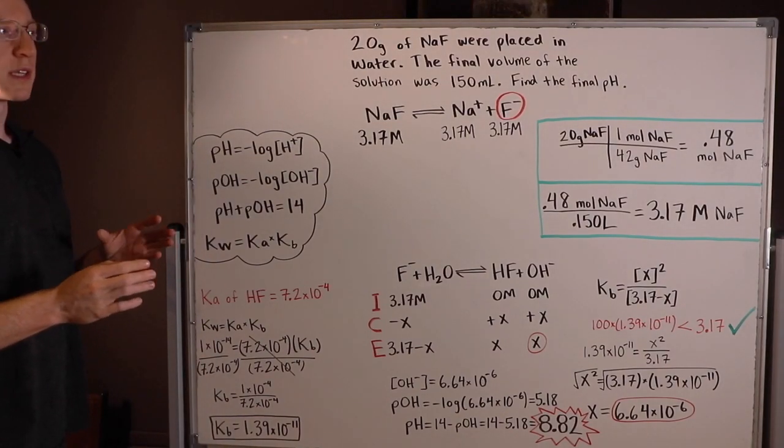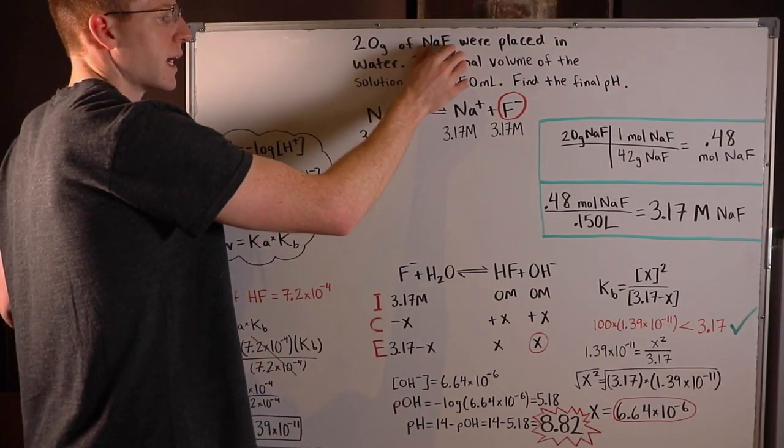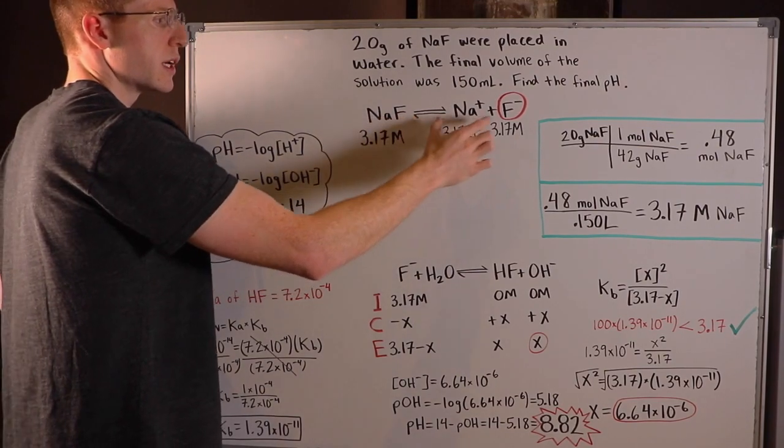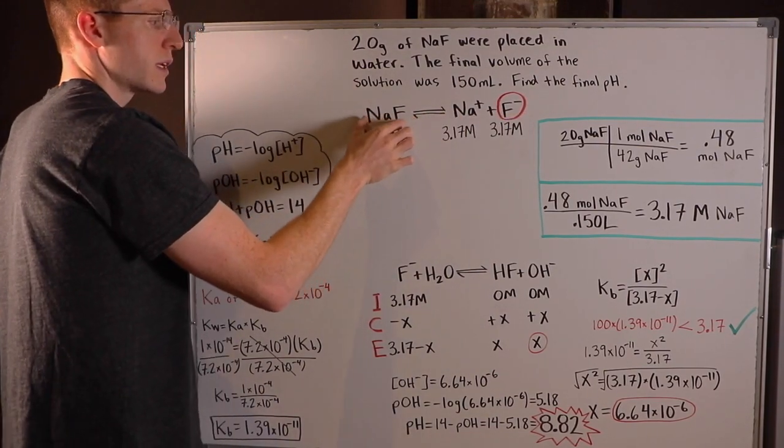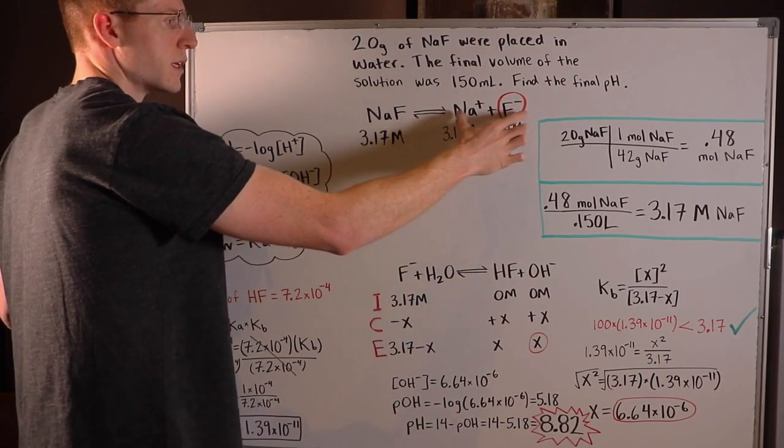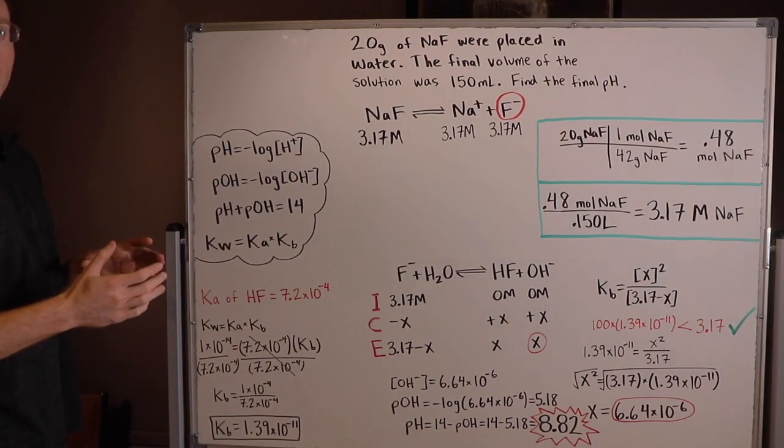So the first step in a problem like this is to take your compound, NAF in this case, and dissociate it into its ions. So I went ahead and did that. I took sodium fluoride and dissociated it into Na+ and F-.